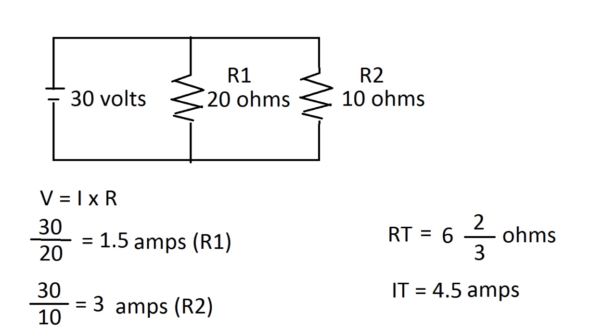Now recall that resistors in parallel have the same voltage going through it. In this case it would be 30 volts going through each resistor. So remember V equals IR. So V over R equals I. So 30 over 20 equals 1.5 amps for R1. And 30 over 10 equals 3 amps for R2.